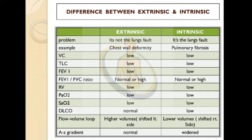Total lung capacity is low in both extrinsic and intrinsic. FEV1 is low in both. The FEV1/FVC ratio remains normal or high in both. Reserve volume is low in both. Partial pressure of oxygen and saturation of oxygen are low in both cases. DLCO is normal in extrinsic but low in intrinsic.